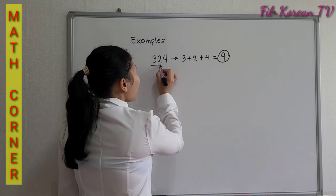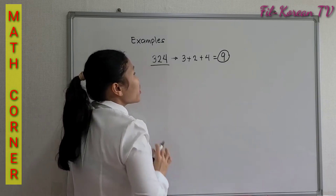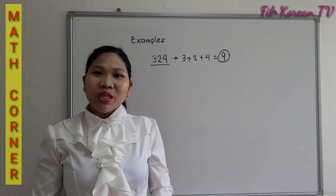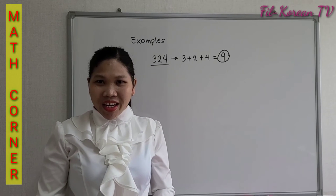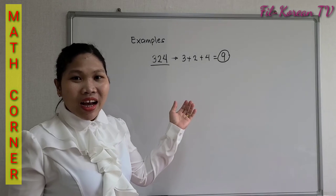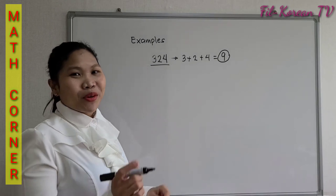Therefore, this number 324 is divisible by 3.